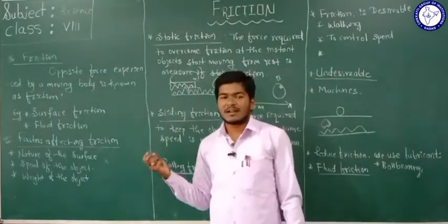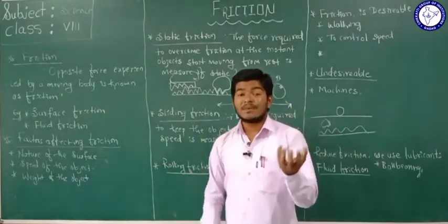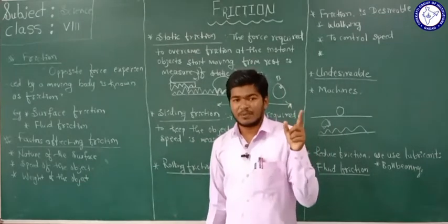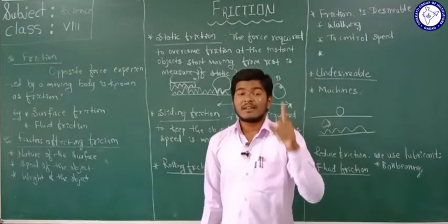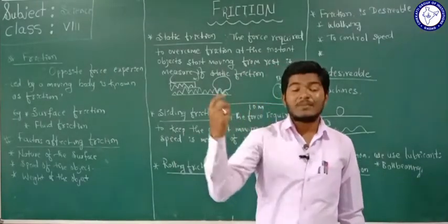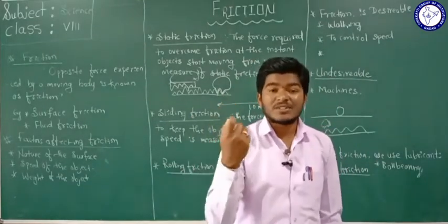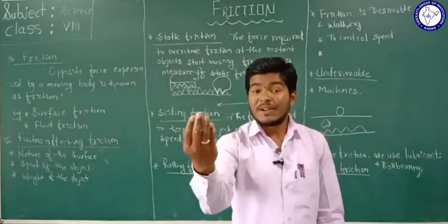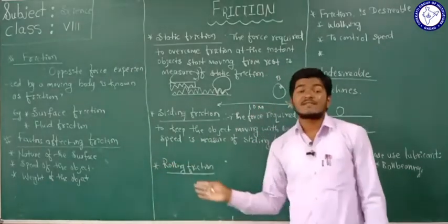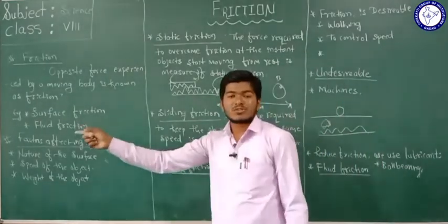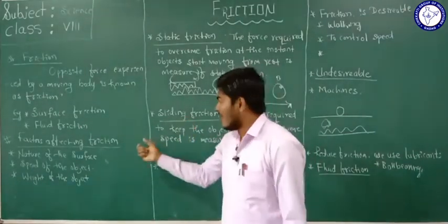The second factor is the speed of the object. As the speed of the object increases, friction experienced by the object also increases. However, there are two conditions: for fluid friction — friction by air or water — it increases with speed. But the friction by the surface on which the object is moving decreases as speed increases.